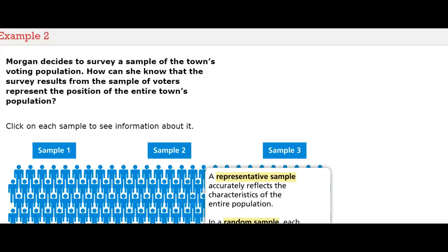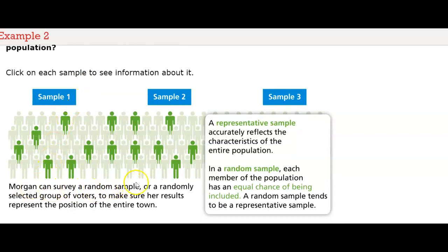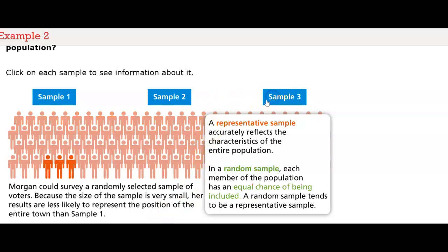Morgan decides to survey a sample of the town's voting population. How can she know that the survey results represent the position of the entire town? Sample one: Morgan can survey a random sample — a randomly selected group of voters — to make sure her results represent the position of the entire town. Sample two: Morgan can survey a convenient sample of the first voter she finds, but these results are not random and are not likely to represent the position of the entire town. A randomly selected sample that is very small is also less likely to represent the entire town.